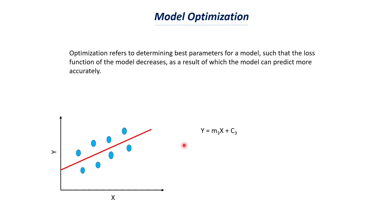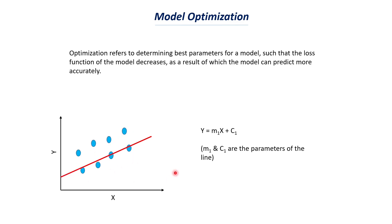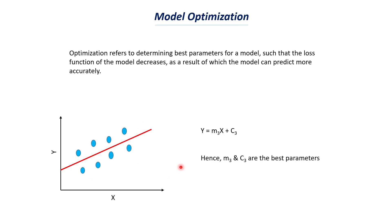Now let's find a third line that fits all data points. This line is closer to both sets of data points, making it an optimal model — a best fit. The parameters of this line are m3 and c3, so the equation becomes y = m3*x + c3. We can say m3 and c3 are the best parameters because this third model is the most optimal. In order to find these best parameters, we need to optimize the model using gradient descent.